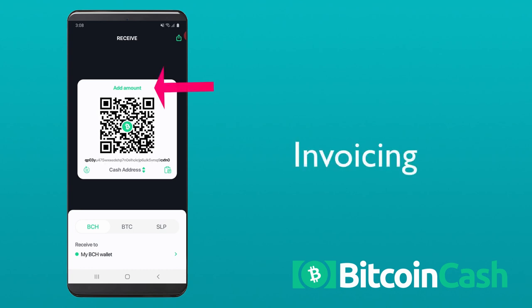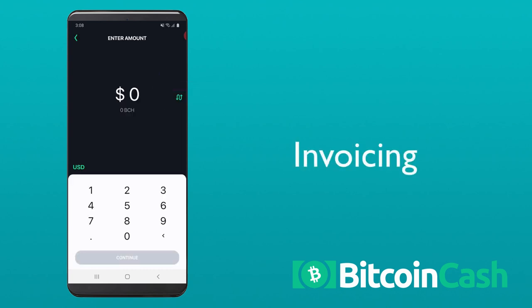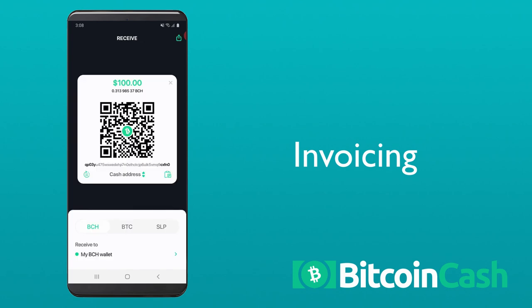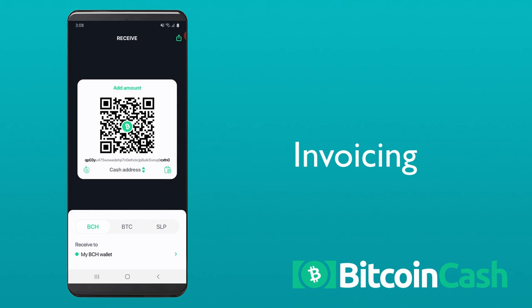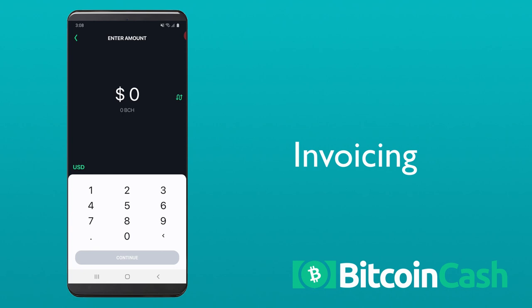You can program your QR code with a specific requested amount, like an invoice, by clicking add amount above the QR code. Enter the amount you wish to be paid and click continue. If you need to change the amount, click the X next to it and try again.